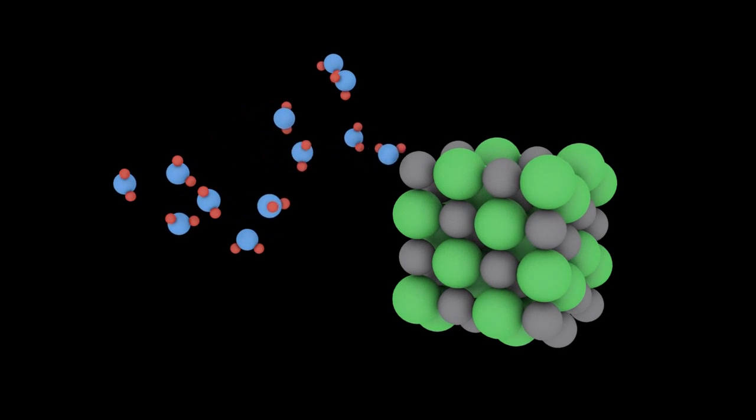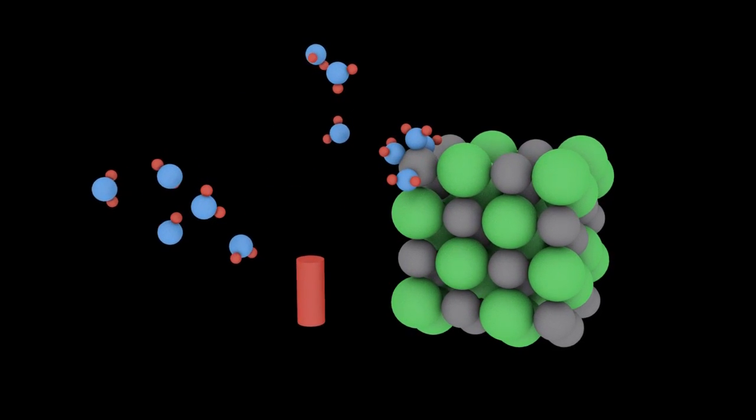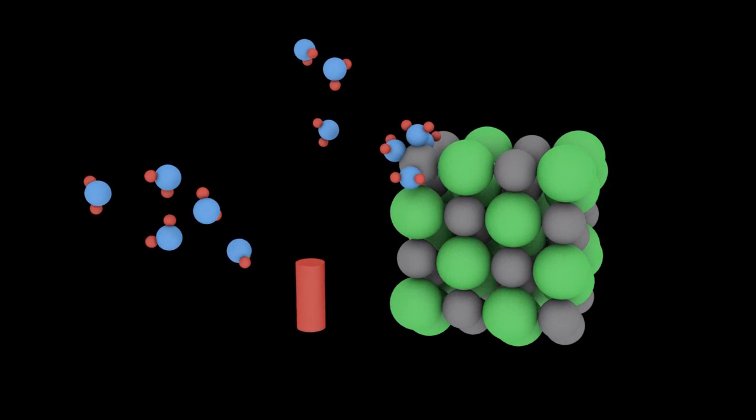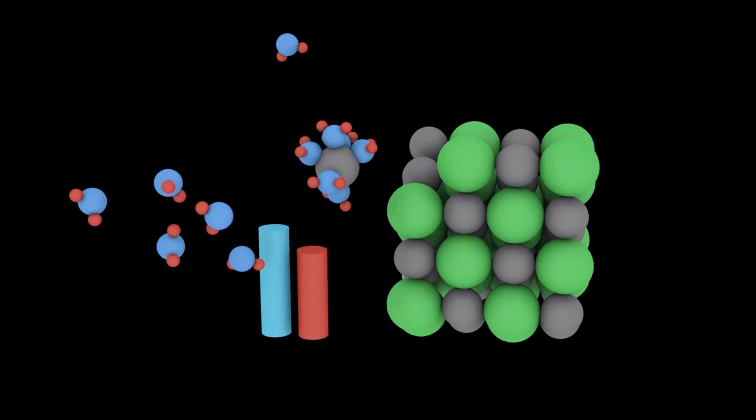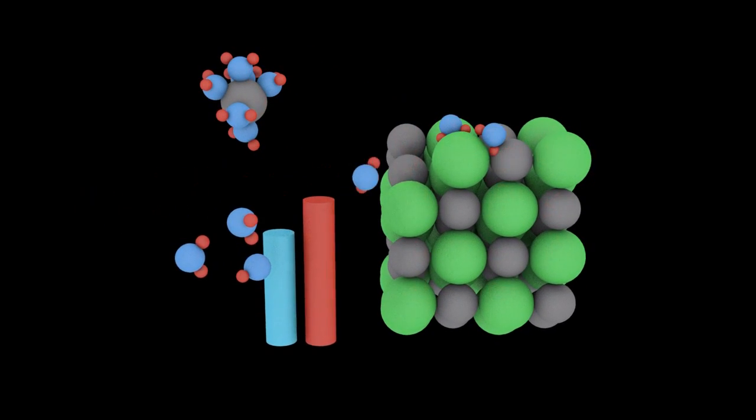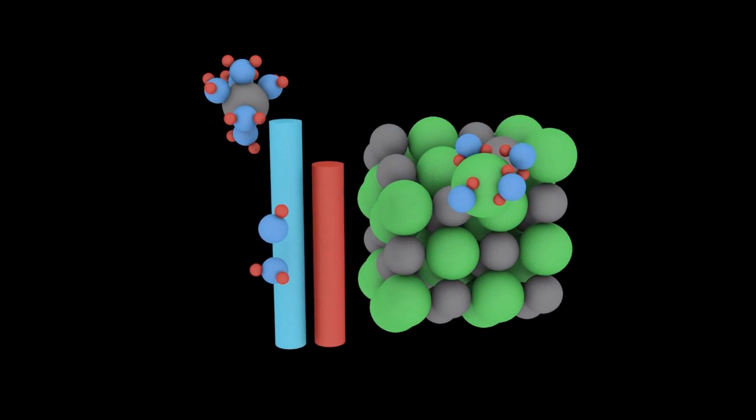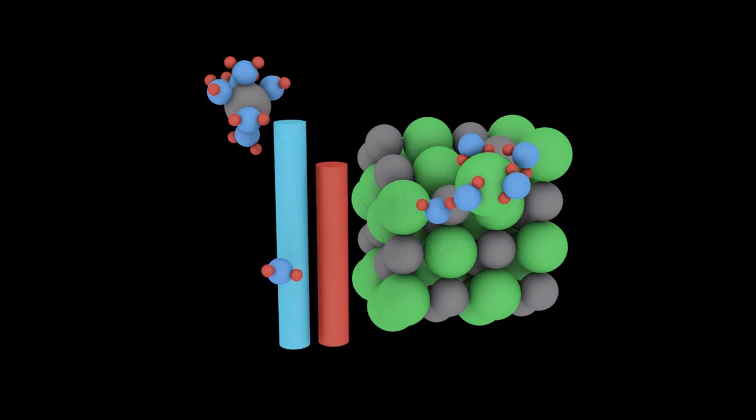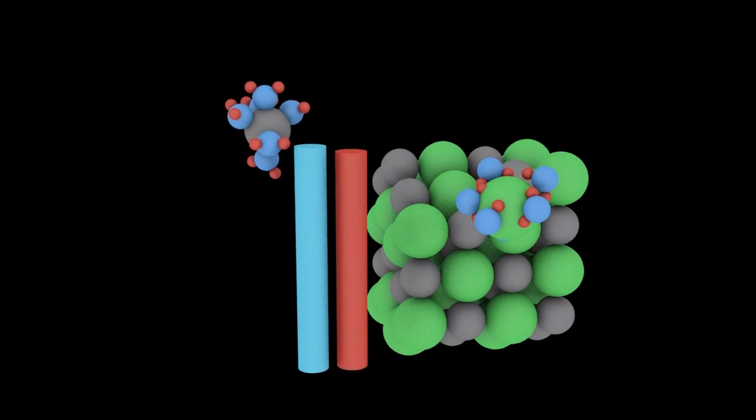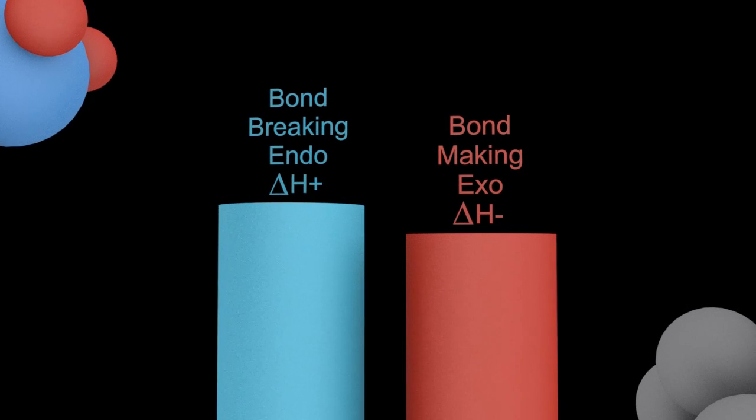So what about the solubility of ionic compounds in water? Well, there are two processes going on here. First of all, the water is attracted to the ion, makes a bond, and that is an exothermic process represented by the red flashes and the red bar. The second process is the ion being pulled away from the attraction of the lattice, bond-breaking, and that is an endothermic process represented by the blue bar and the blue lights.